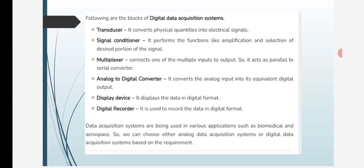The blocks of digital data acquisition systems are: Transducer converts physical quantities into electrical signals. Signal conditioner performs functions like amplification and selection of desired portions of the signal. Multiplexer converts one of multiple inputs to output, acting as a parallel to serial converter.